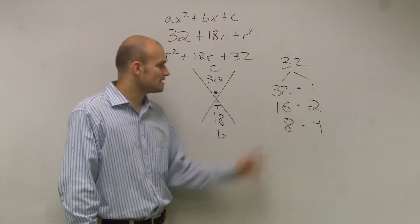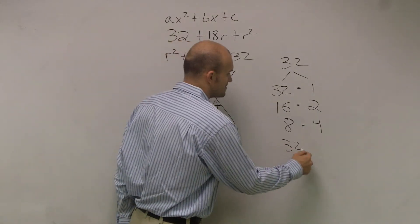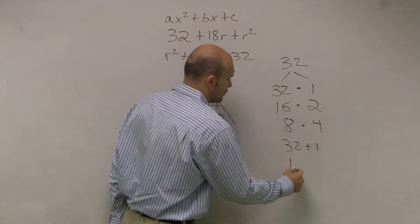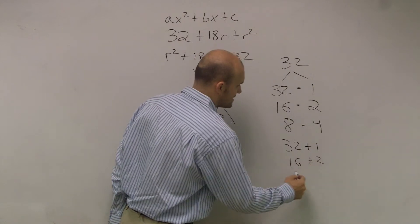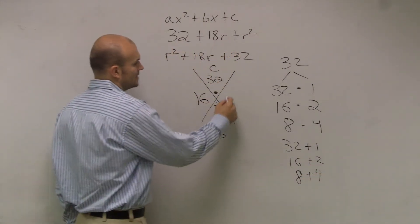So then you look at these. What out of these two, which one of these, when I say add them up to get your b, which one of those add up to 18? 16 and 2. So we just say 16 and 2.